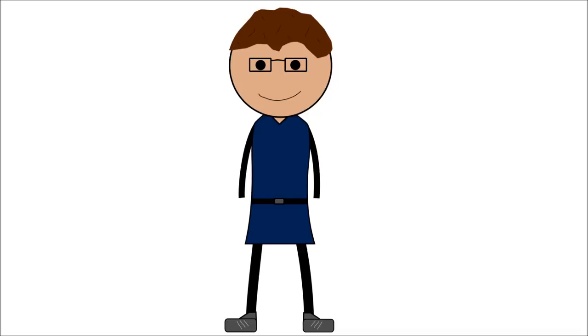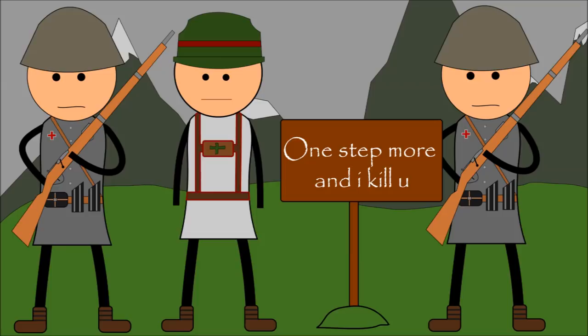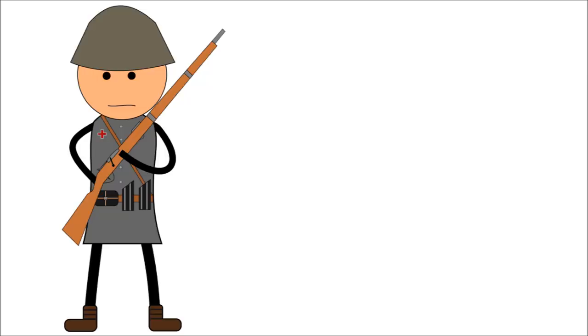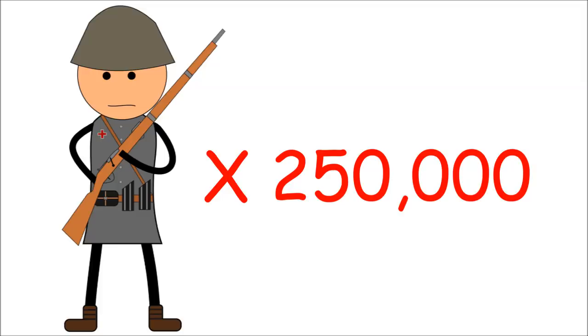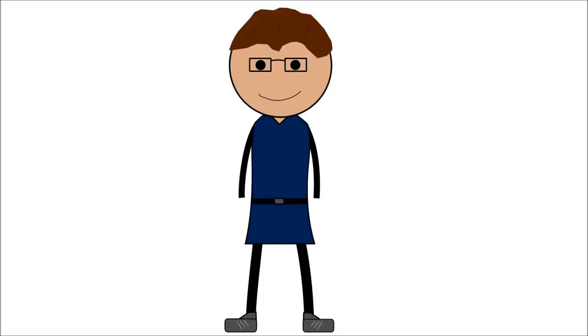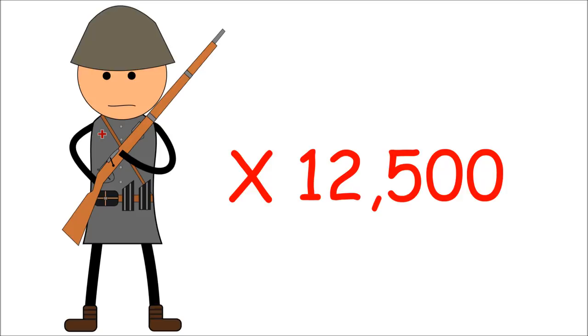Once it became clear that war was on the horizon, the Swiss military was mobilized and stationed all along the mountain passes that led into the country. At the start of the war, the Swiss Army numbered around 250,000 men. Once it became clear that no one was going to invade Switzerland though, the numbers started dropping. And by the end of the war, there were only about 12,500 men ready for combat.